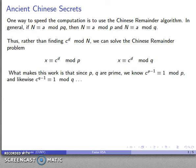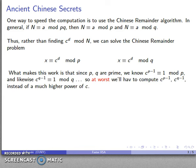What makes this work is that since p and q are prime and much smaller than N, first of all, I know that C to power p minus 1 is congruent to 1 mod p, and likewise C to power q minus 1 is congruent to 1 mod q. So at worst, we'll have to compute C to power p minus 1, C to power q minus 1, instead of a much higher power of C.